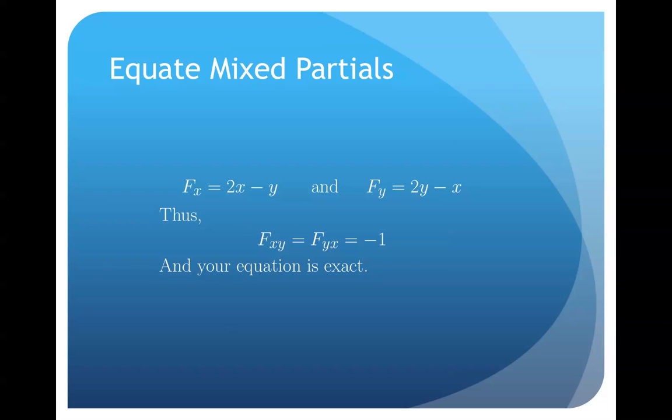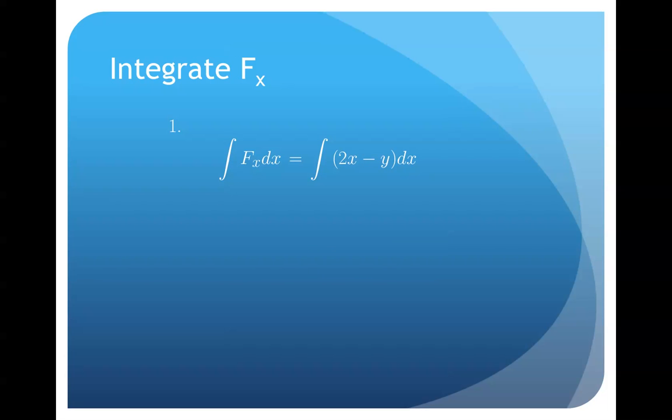OK, so let's go to step 1. Step 1 is to integrate f sub x. So we'll integrate 2x minus y dx, and we'll get our answer right away. Our answer is going to be x squared minus yx plus g of y, some function g of y. So this is going to be our final answer.